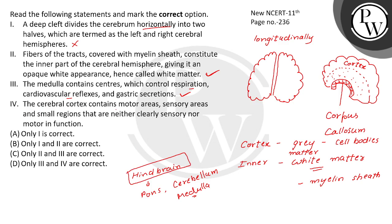The next statement: the cerebral cortex contains motor areas, sensory areas, and small regions that are neither sensory nor motor in function. This statement is incorrect. It is not a small region — it is a large region. There are motor areas and sensory areas, and large regions that are neither sensory nor motor are called association areas. They are responsible for complex functions like inter-sensory association, memory, and communication.